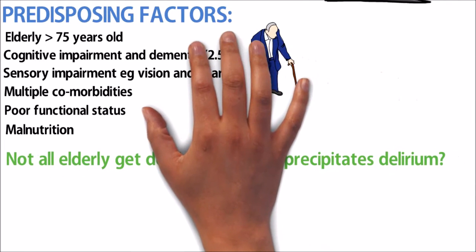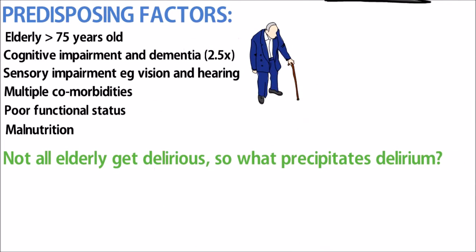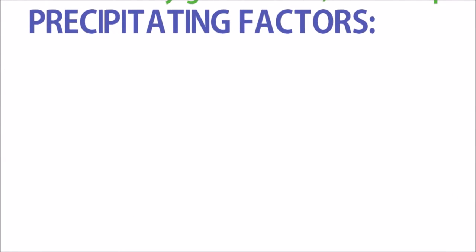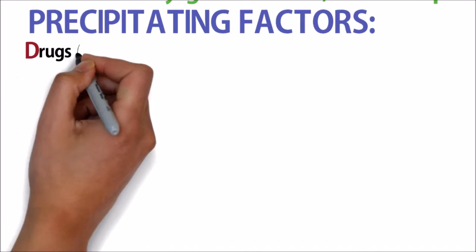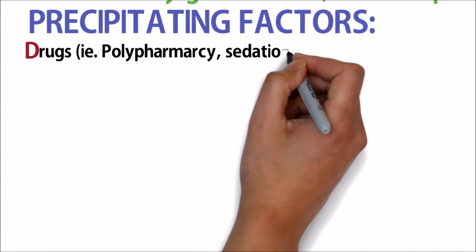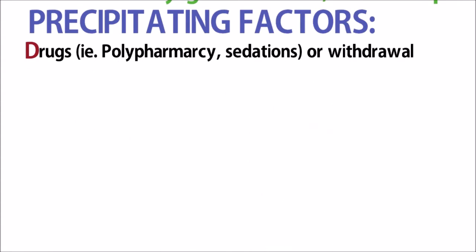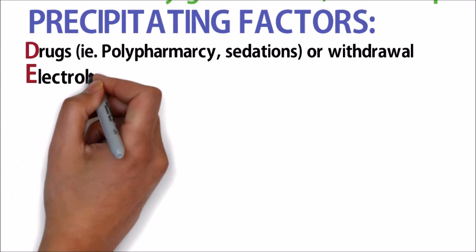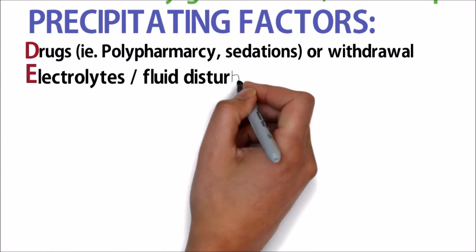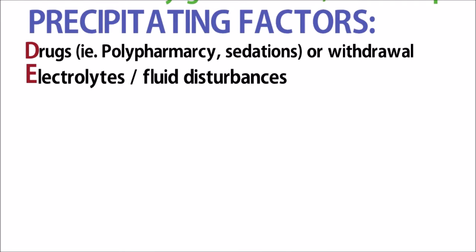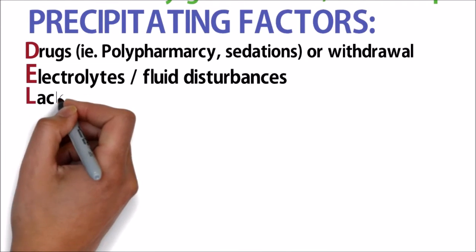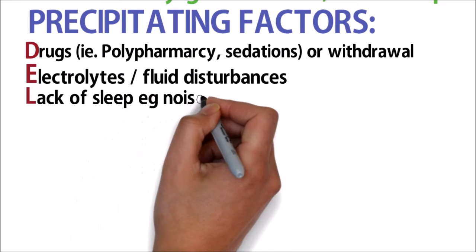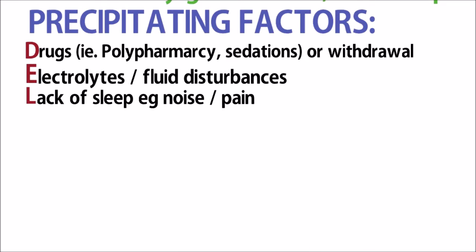Not all elderly get delirious, so what actually precipitates delirium? Precipitating factors include D for drugs — for example, polypharmacy, sedation, or withdrawal. E for any electrolyte or fluid abnormalities, for example dehydration. L is for lack of sleep, which can be caused by noise or pain.